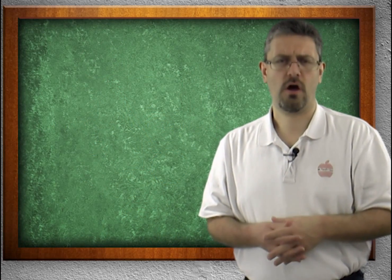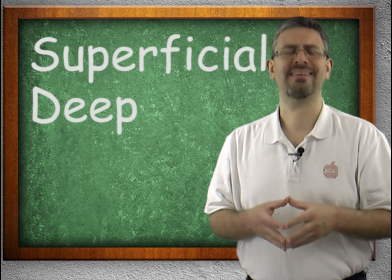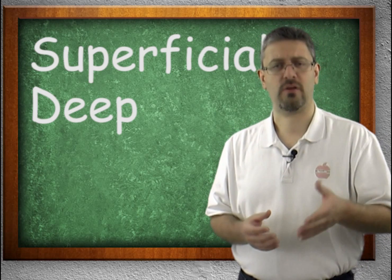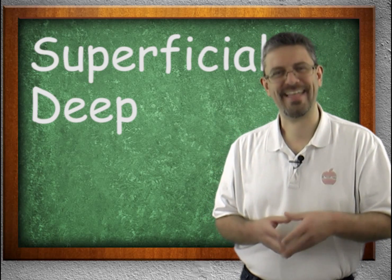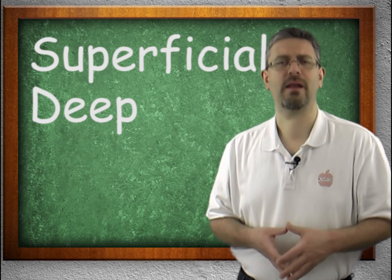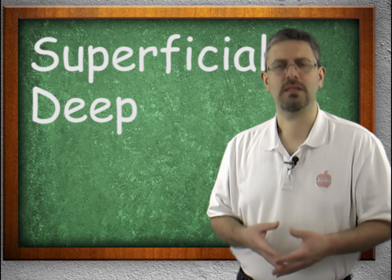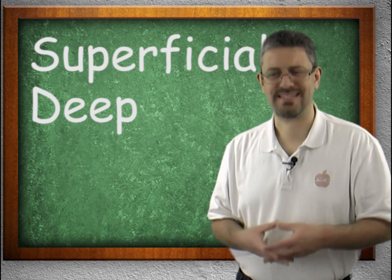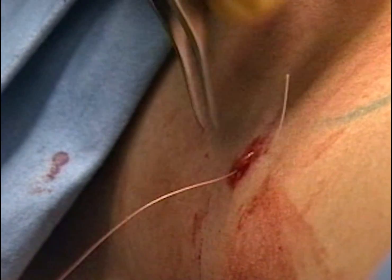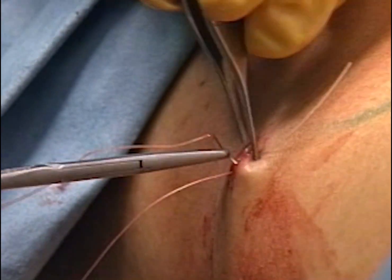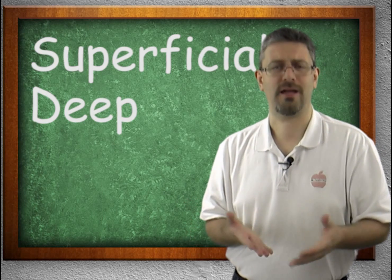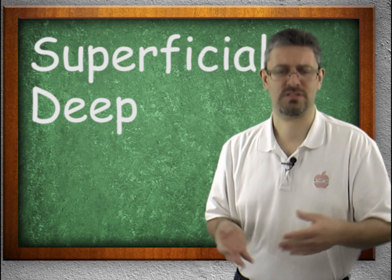Our last two are superficial and deep. If you get a lesion — which is a fancy word for boo-boo — and it is superficial, we're talking about a paper cut. If you have a lesion that is deep, we're talking about stitches. Superficial is towards the surface, while deep is deep in.